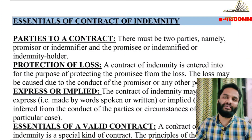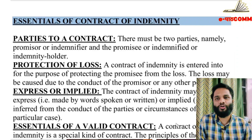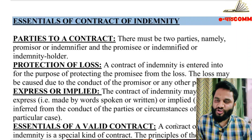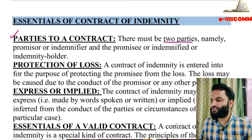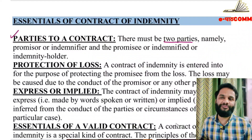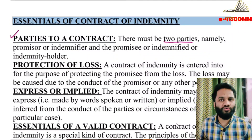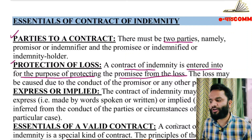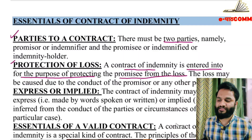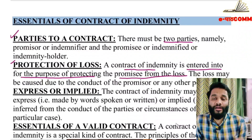Essentials of contract of indemnity: First, parties to a contract - there must be two parties, one indemnifier and one indemnified. Second, protection of losses - a contract of indemnity is entered into for the purpose of protecting the promisee from loss. The loss may be caused due to the conduct of the promisor or any other person. The sole purpose must be to protect against loss.